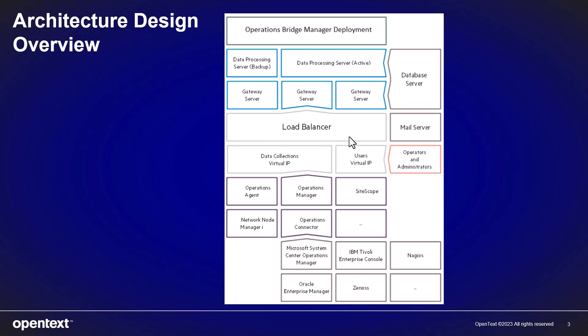There is also the load balancer that OBM requires in distributed deployments that include at least two gateway servers. It is a server that performs load balancing, dividing the workload among the gateway servers. As a result, the overall OBM performance and availability increases.